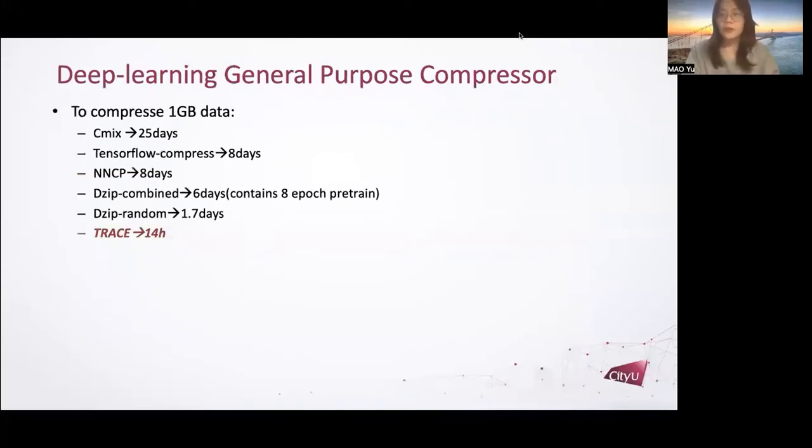We provide some numbers here to give the audience a sense of state-of-the-art speed. NNCP need 25 days to compress 1GB data. TensorFlow Compress need 8 days as well as NNCP. The most recent DVIP is quite faster than those compressors, but DVIP still needs 1.7 days to go over 1GB of data.